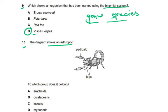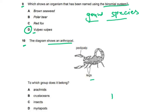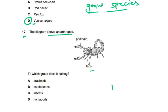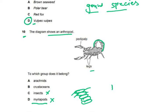Question ten: the diagram shows an arthropod with many legs and pedipalps — to which group does it belong? Myriapods have a pair of legs per segment with many segments; insects have wings; crustaceans and arachnids are the remaining options. This arthropod does not have wings and the last part has no legs, so it cannot be a myriapod. It must be an arachnid. The answer is A.